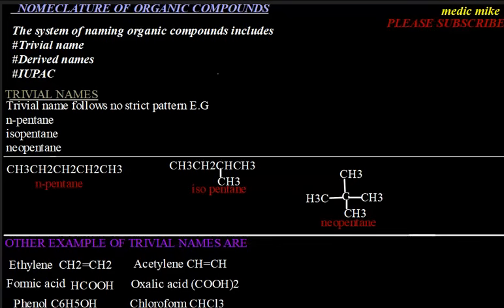First, let's talk a little about trivial names. Trivial names are names that follow no strict pattern — they are names that refer to the source, origin, or special characteristics of a compound.